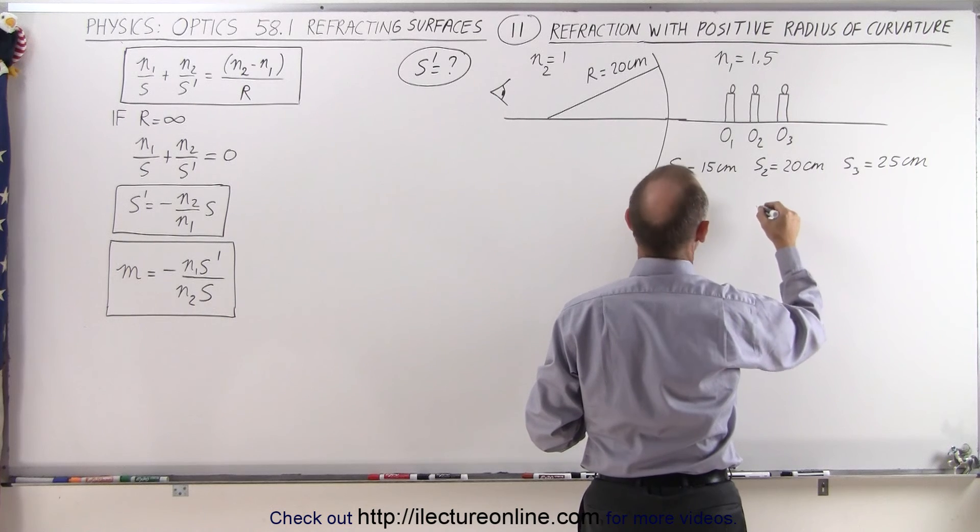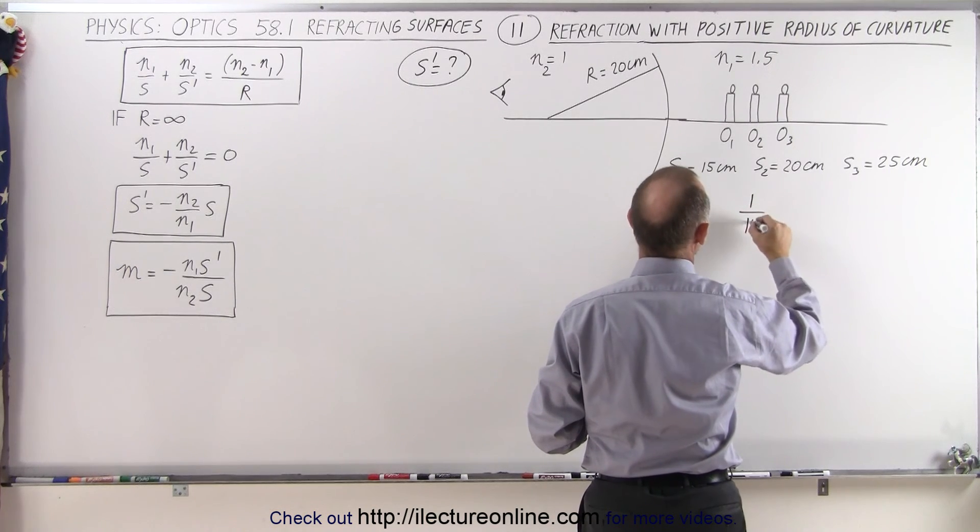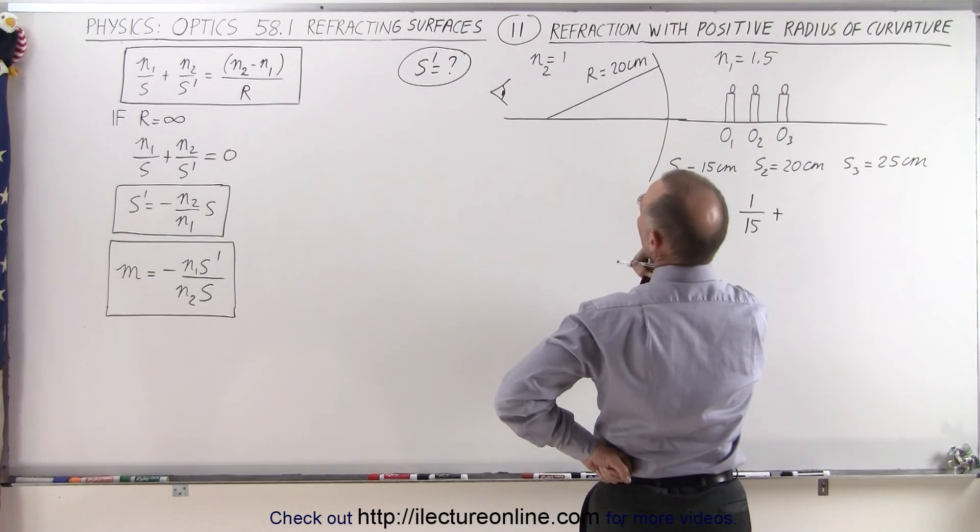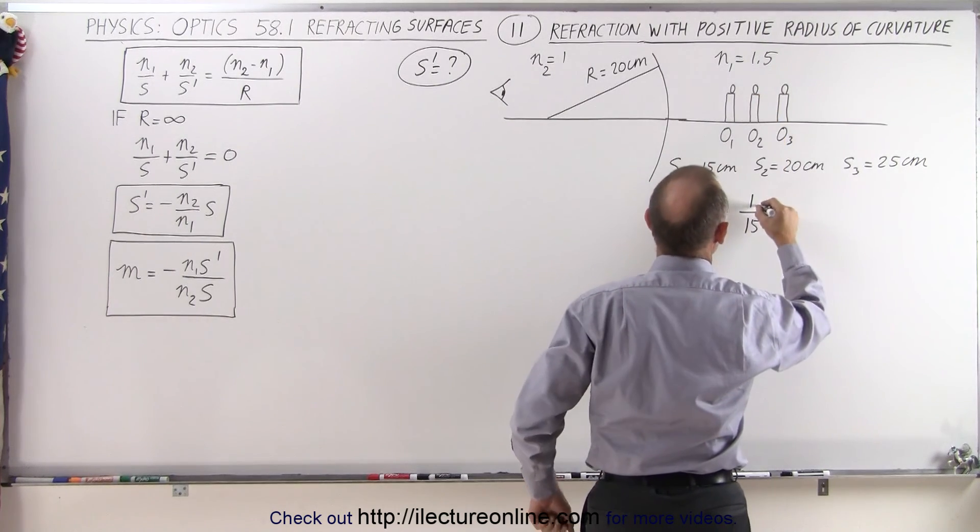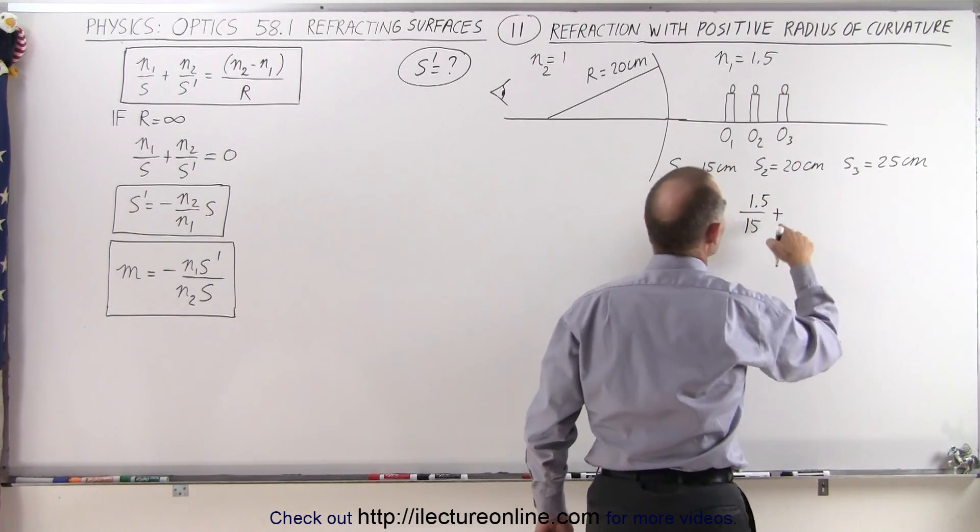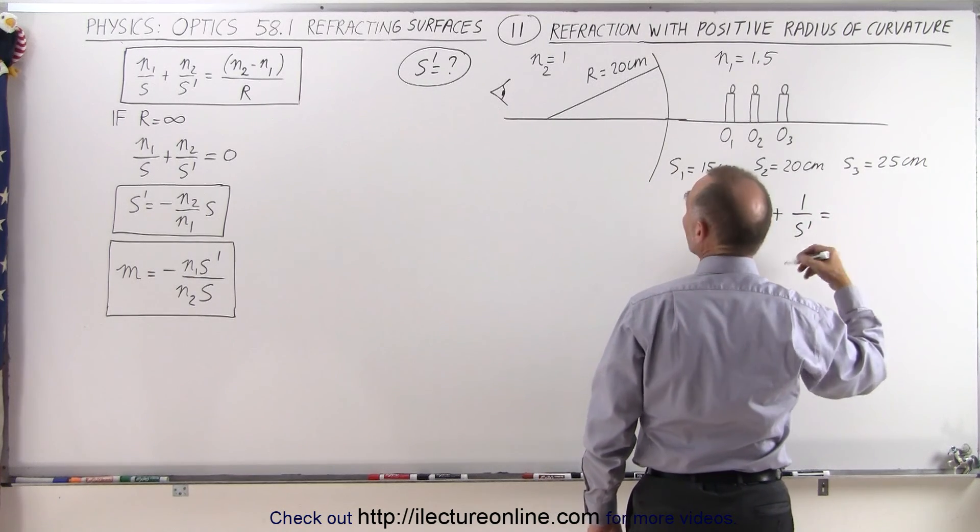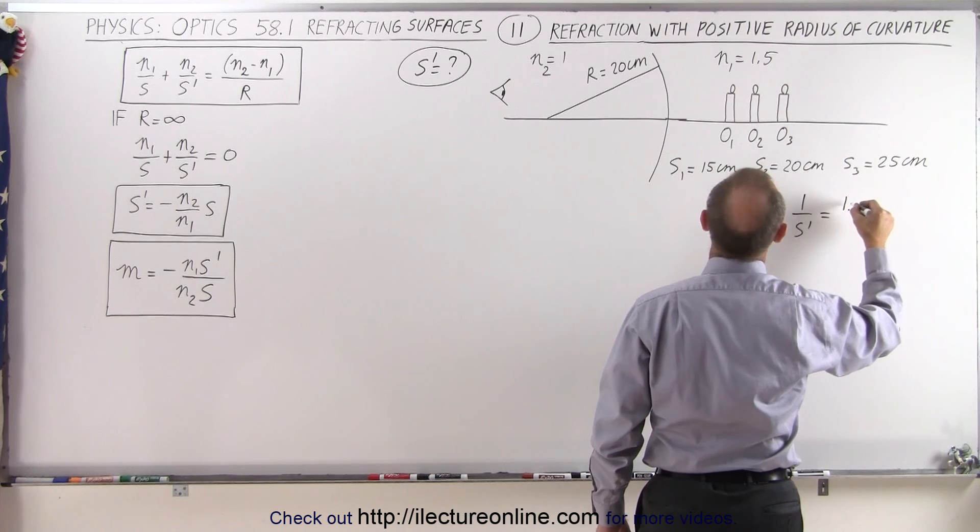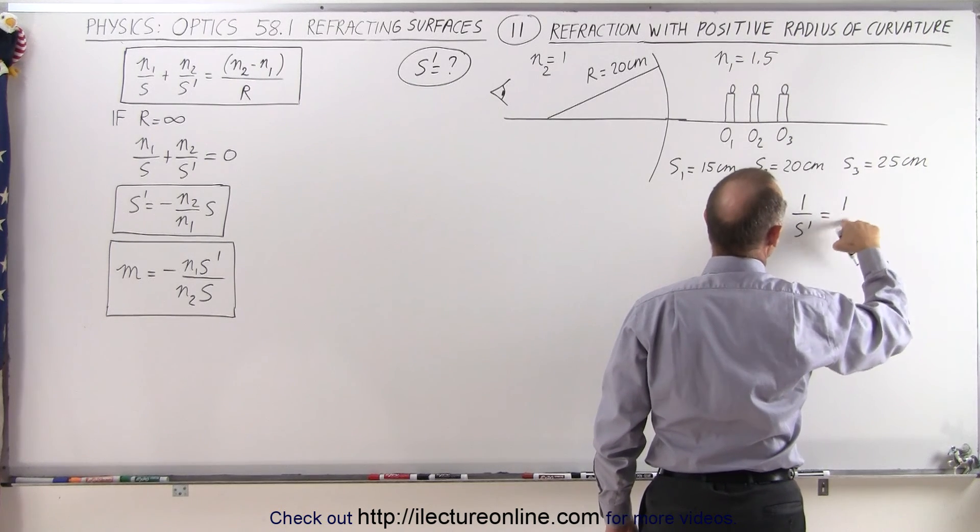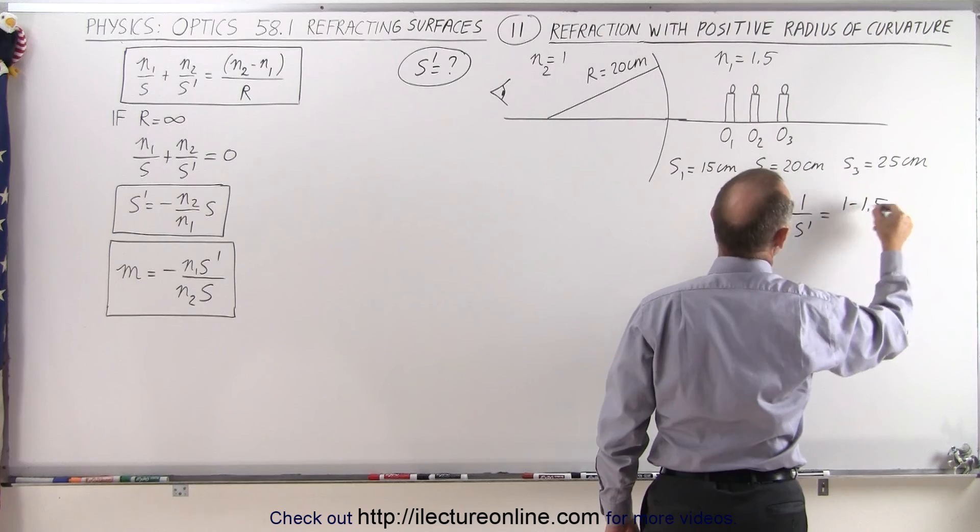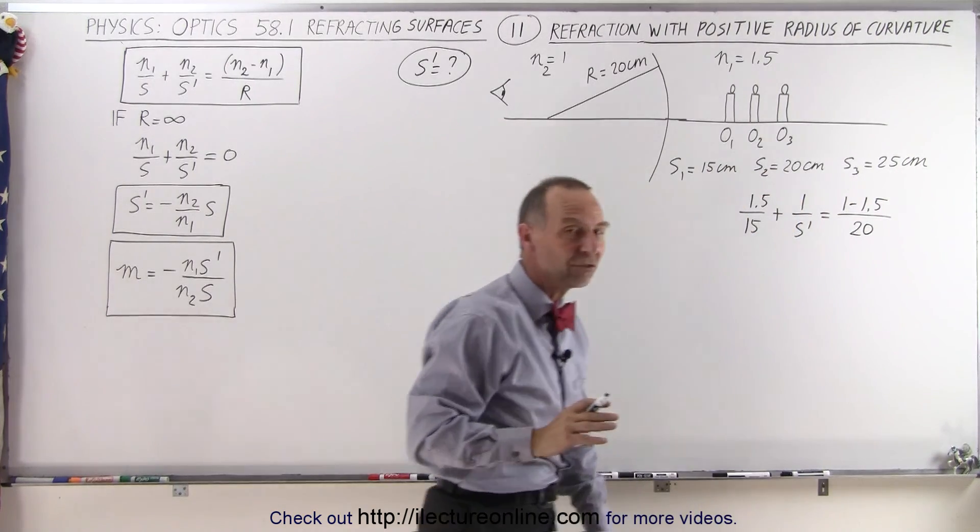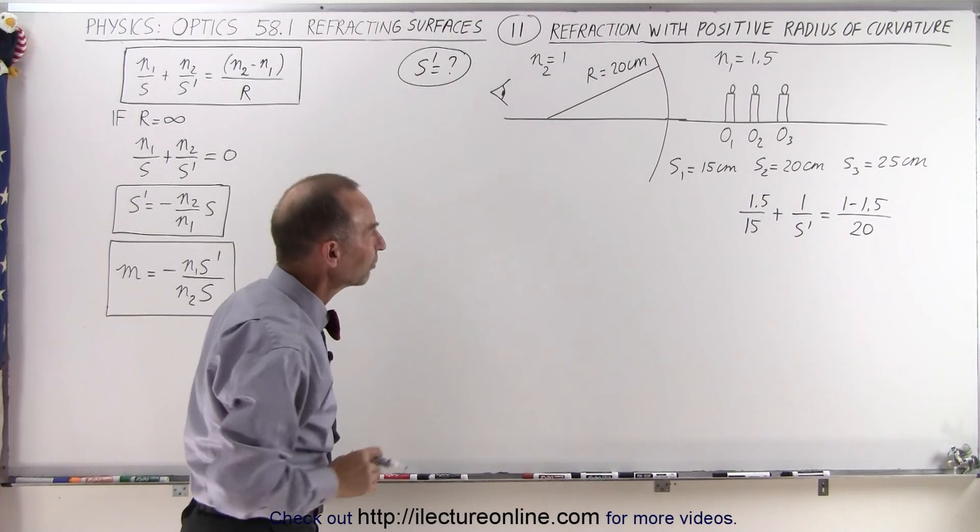N1 over S, that would be 1.5 over 15, plus 1 over S' is equal to N2 minus N1, that would be 1 minus 1.5, divided by, in this case it's going to be a positive 20, because it's a convex surface relative to the object.